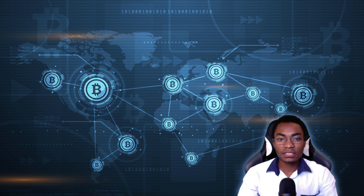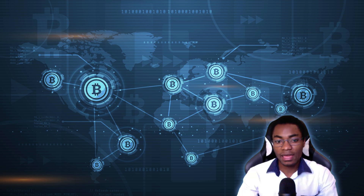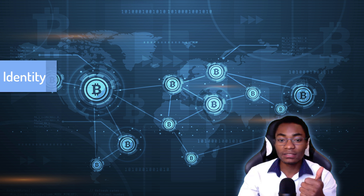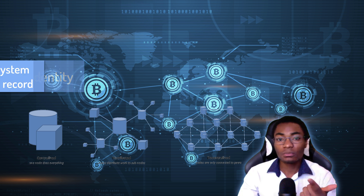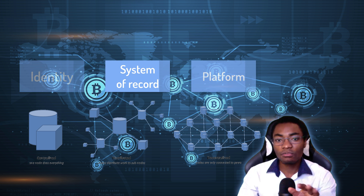So before we get started, I just want to say that in this talk, we are going to take a look at the blockchains. And the blockchains are usually built from three types of technology — to protect your identity, system of record, and as a platform.